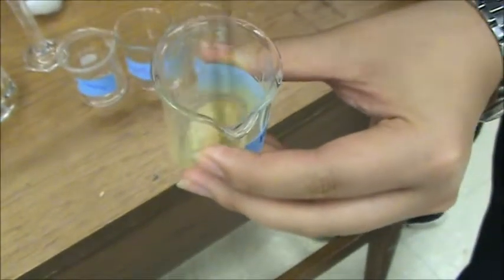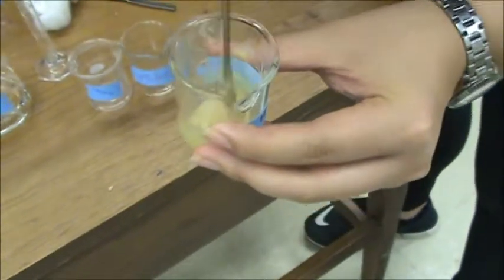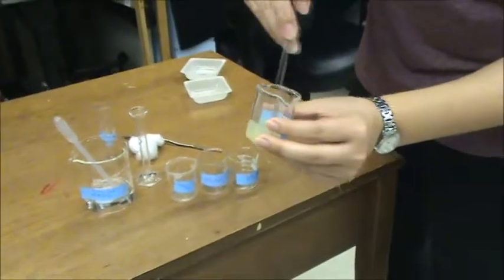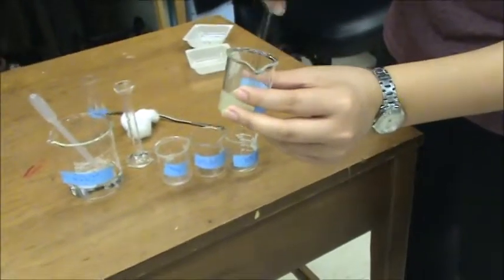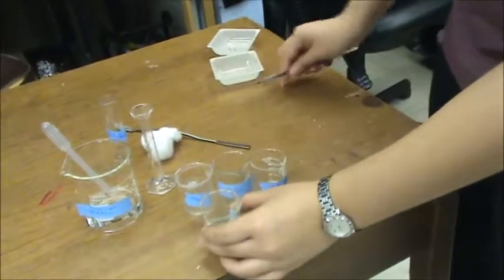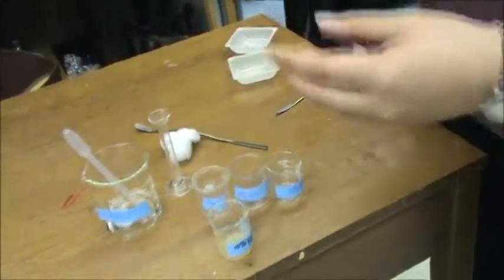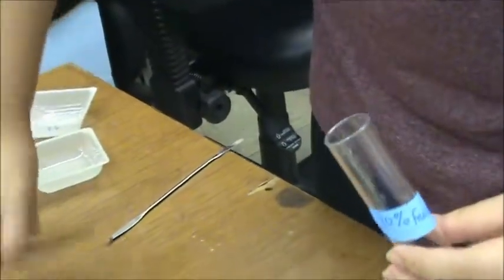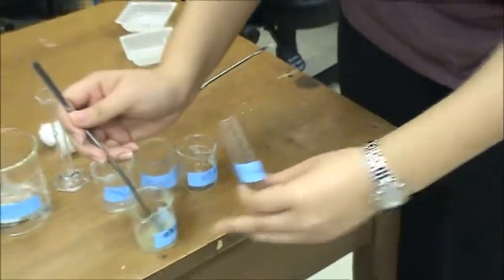And it doesn't take very long at all. After it's mixed together fairly well, you want to take your tube that your fly will be in and once again make sure that it's labeled. And then just take some of the food and put it in there.